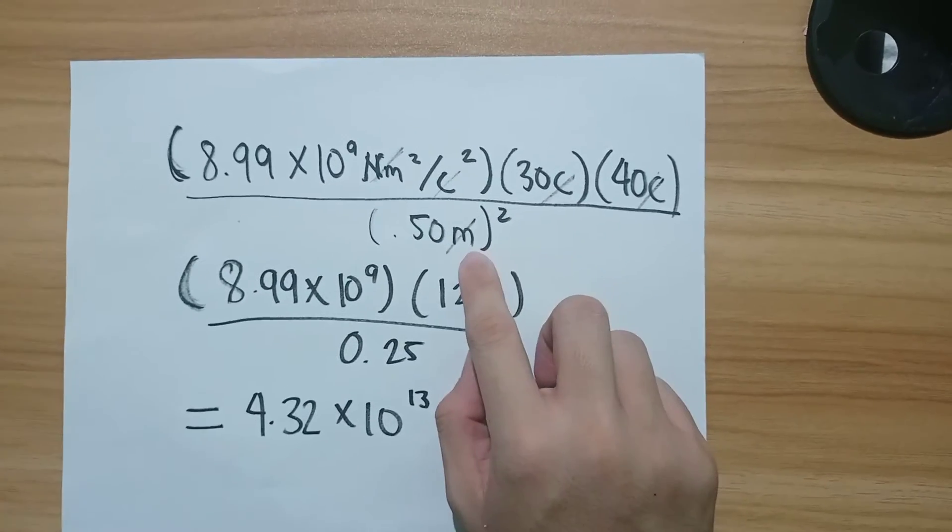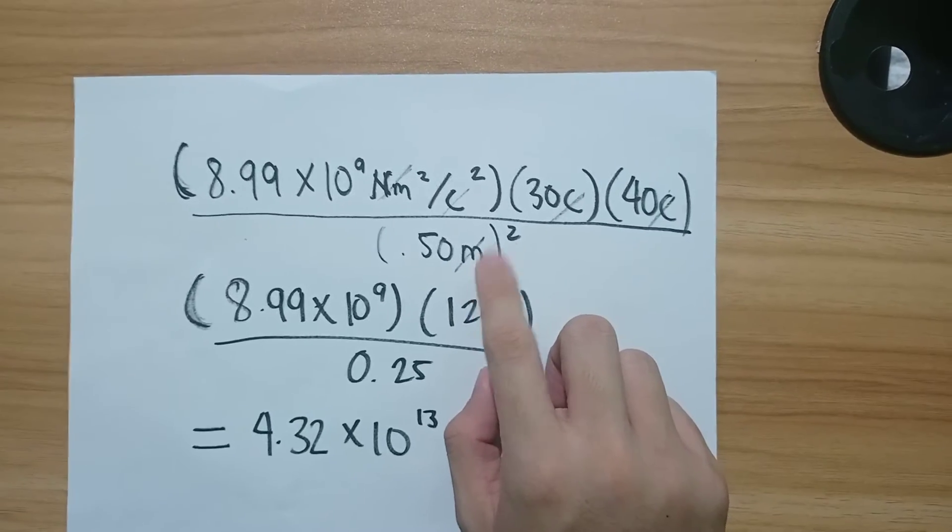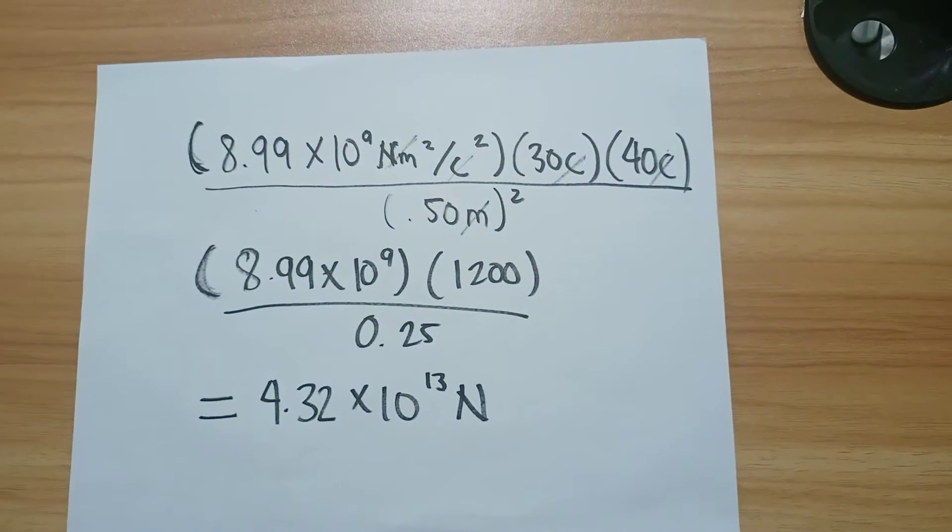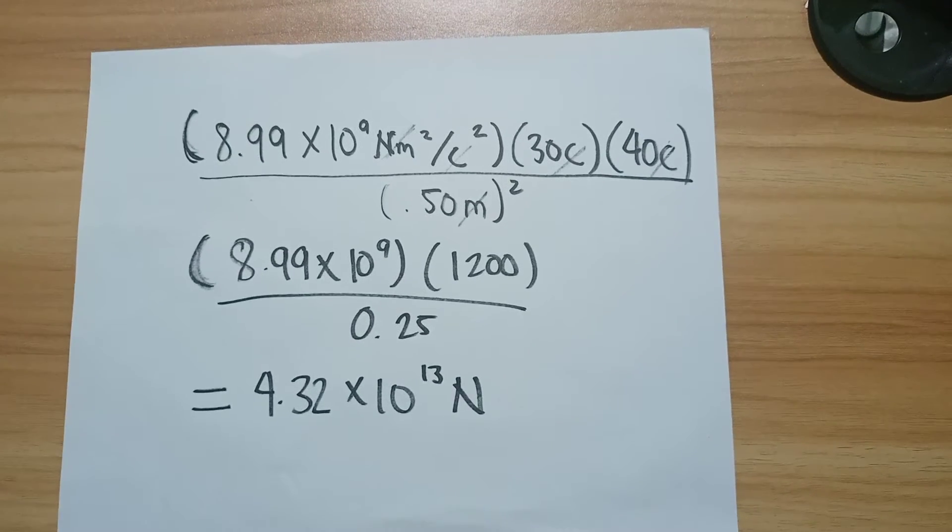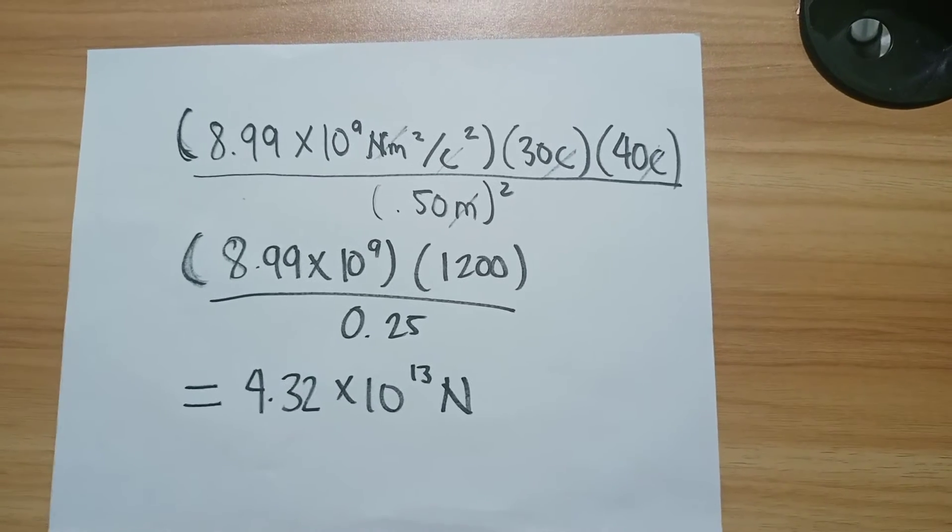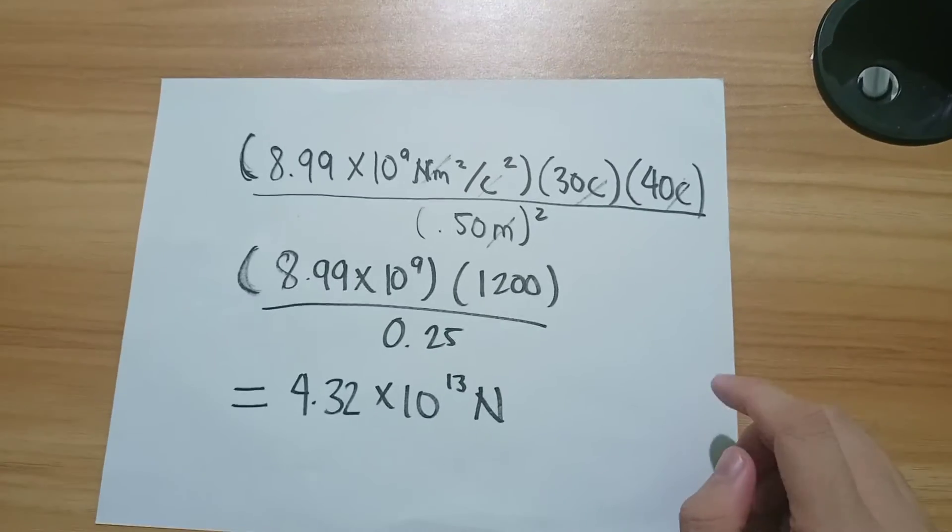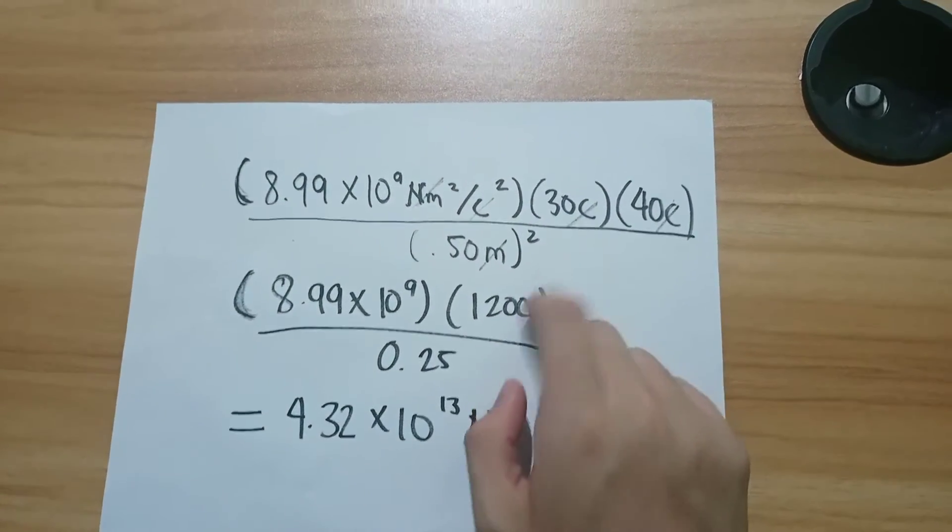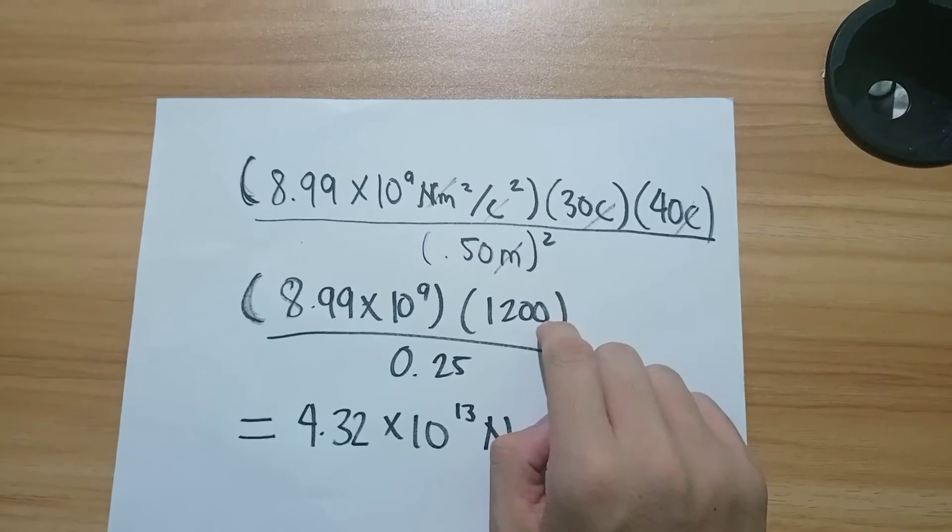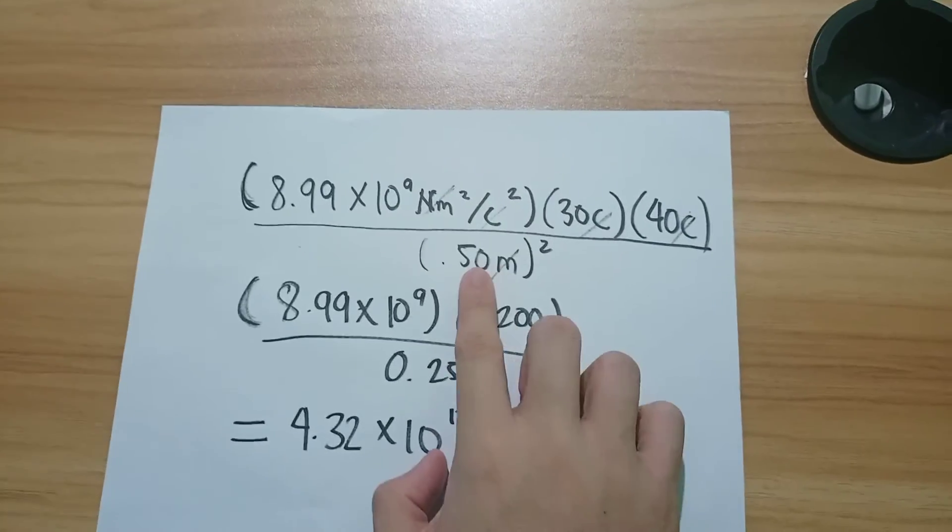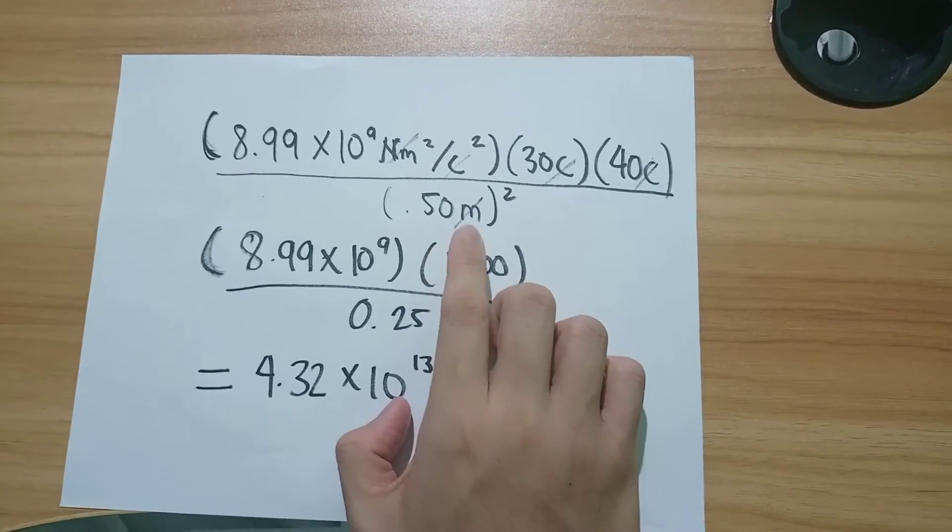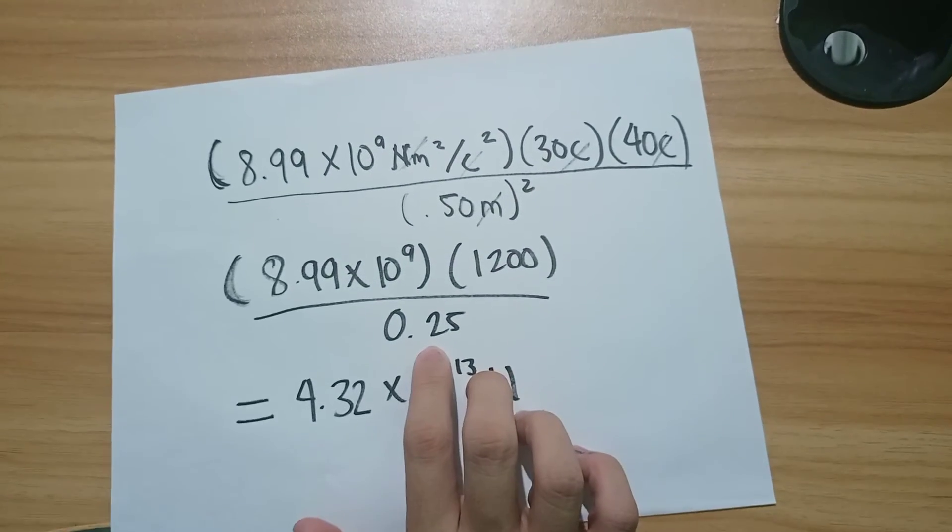Now the first step is we are going to cancel out the units and multiply the two product charges. After we cancel this out, we multiply since we already have two charges. And next we are going to find the force. Now this is the result of the two charges multiplied, which is 1200. And now we convert the radius. This is the result of 50 squared, which is 0.25.